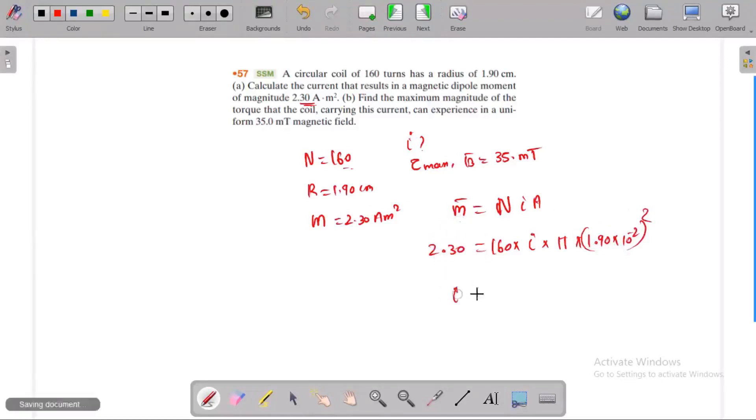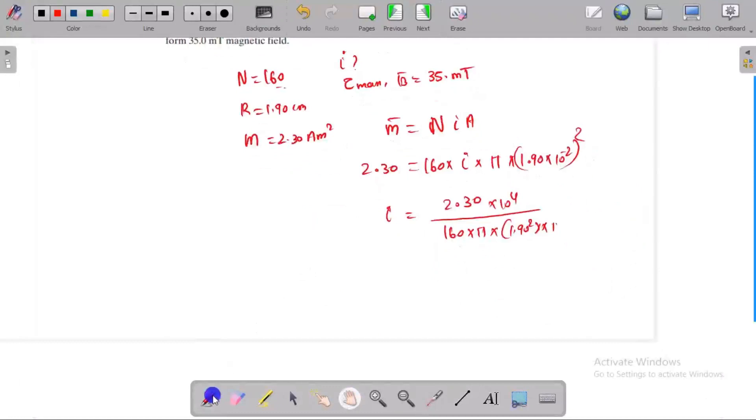From this we can easily find out the current value: 2.30 divided by 160 times 1.90 squared times 10 to the power minus 4. Solving this gives us the value of 12.7 amperes.